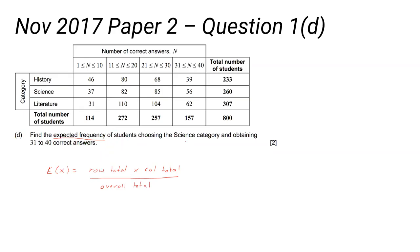We're looking at the expected frequency of students choosing the science category and obtaining 31 to 40. So we're looking at the expected number of people in that category. So our row total is here, our column total is here, and our overall total is there. So it'll be 260 times 157 divided by 800. And that answer might not necessarily be an integer - if it's not, give it to three significant figures as normal.